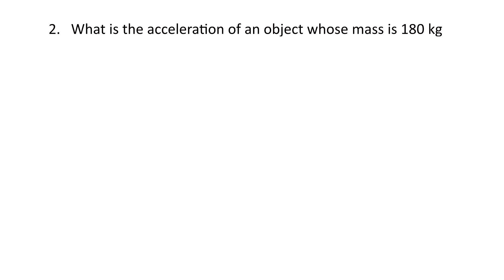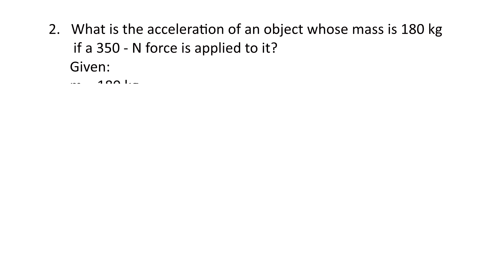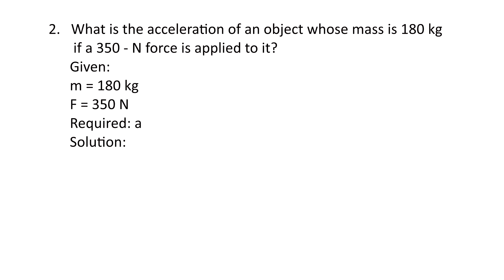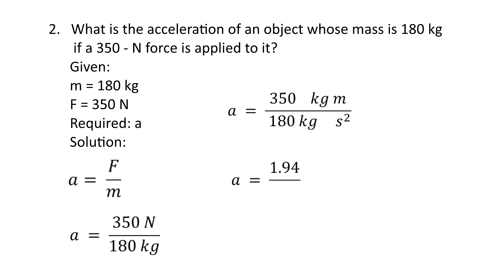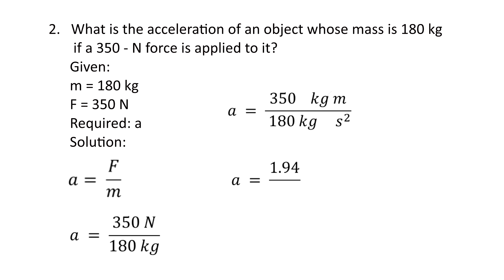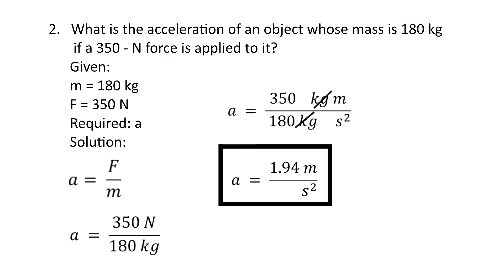For number 2, what is the acceleration of an object whose mass is 180 kilograms if a 350 Newton force is applied to it? The given: mass equals 180 kilograms, force equals 350 Newtons, and the unknown is acceleration. Using acceleration equals force over mass, we substitute: 350 Newtons divided by 180 kilograms equals 1.94. The Newton unit reduces to meter per second squared, so the acceleration equals 1.94 meters per second squared.